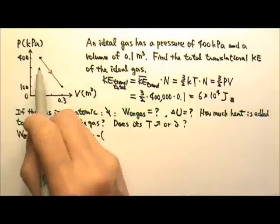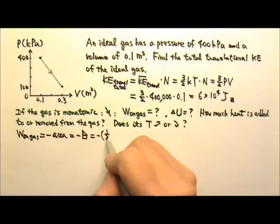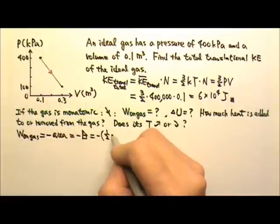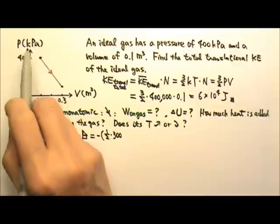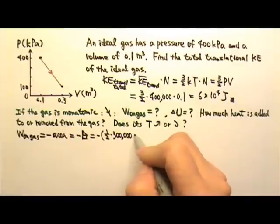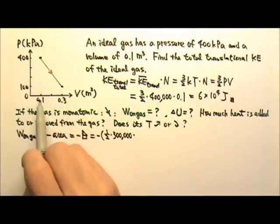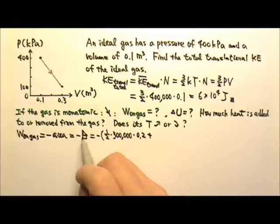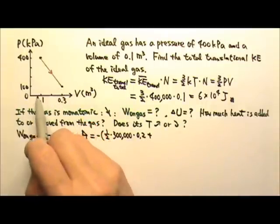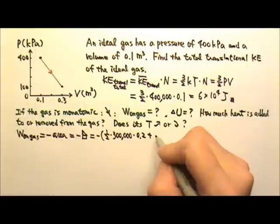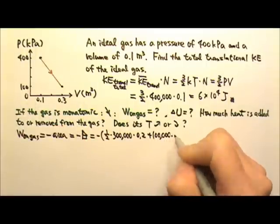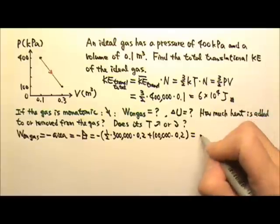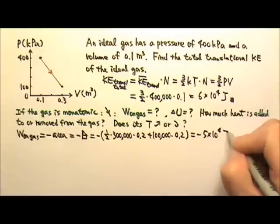For the triangle part, the area is one-half times the height. The height goes from 100 to 400, so the height is 300 kilopascals, or 300,000 pascals, times the base from 0.1 to 0.3, so the base is 0.2. Plus the area of the rectangle: the height is 100 kilopascals times the base of 0.2.